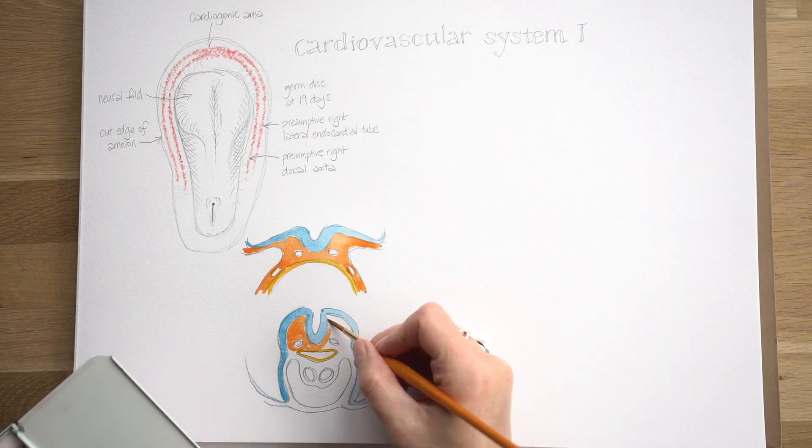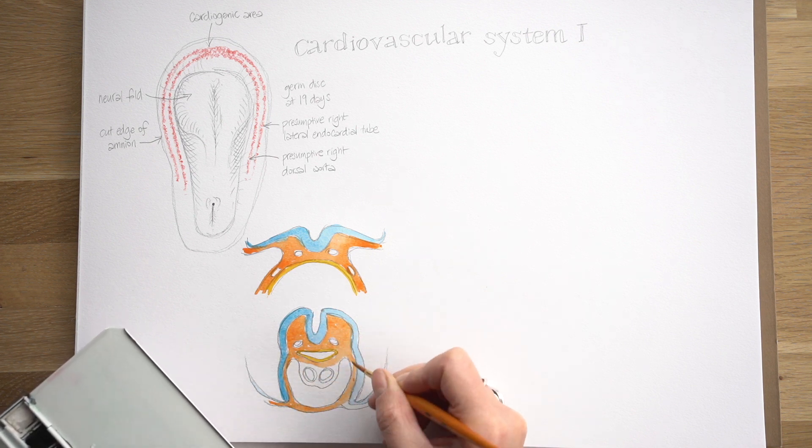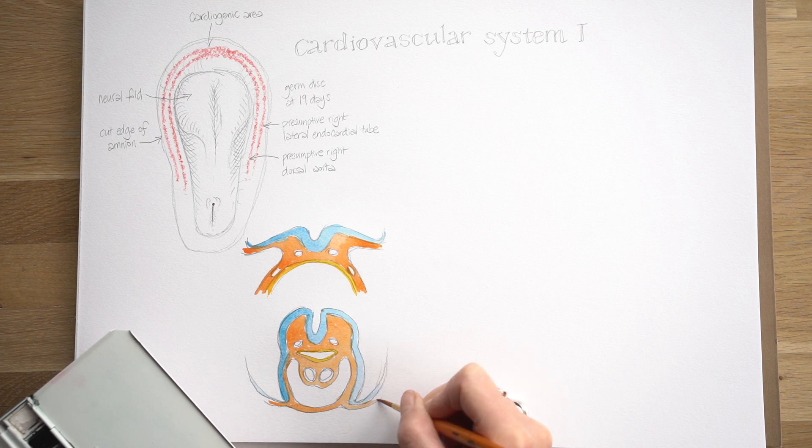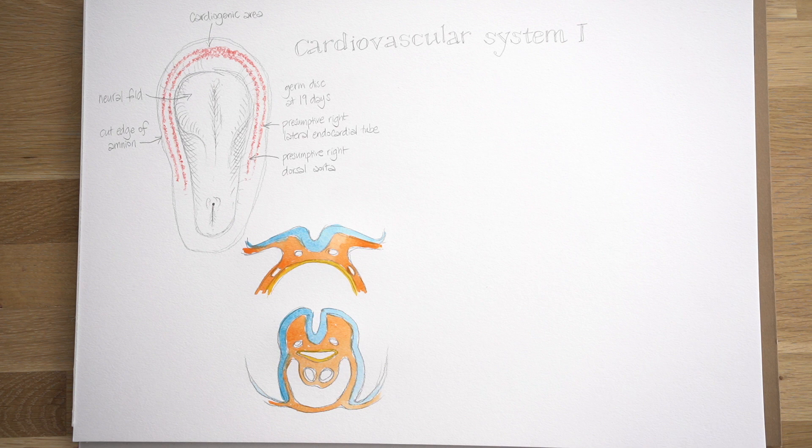In that lower image you can see the dorsal aorta there at the back just behind the gut tube and the two endocardial tubes which are now surrounded by mesoderm but also lying within that cavity that is trapped inside the embryo when it's done its folding, the intra-embryonic cavity.